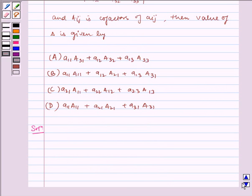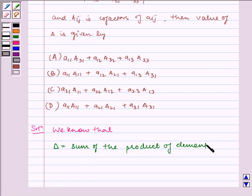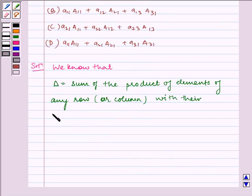Now let us write the solution. We know that delta is equal to the sum of the product of elements of any row or column with their corresponding cofactors.